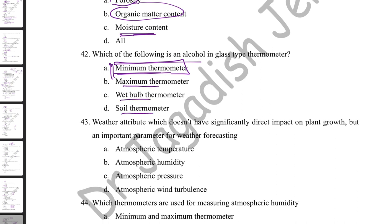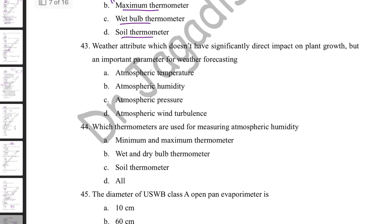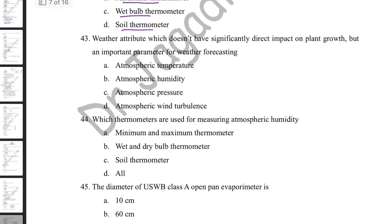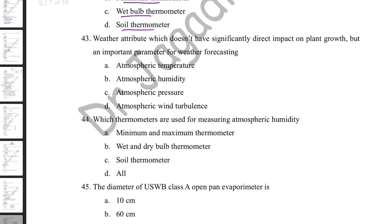Which is an alcohol-in-glass type thermometer? That is the minimum thermometer — it contains alcohol instead of mercury. All other thermometers contain mercury. Which weather attribute has no significant direct impact on plant growth but is important for weather forecasting? That is atmospheric pressure — it affects wind movement and rainfall indirectly but does not directly affect plant growth.